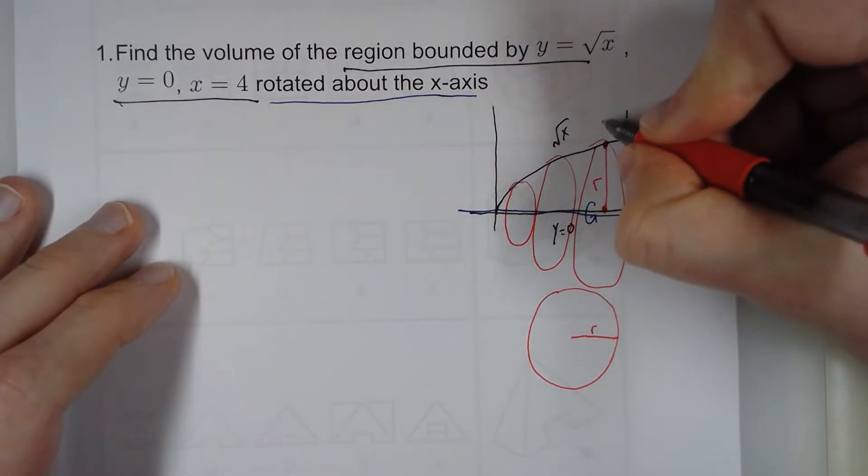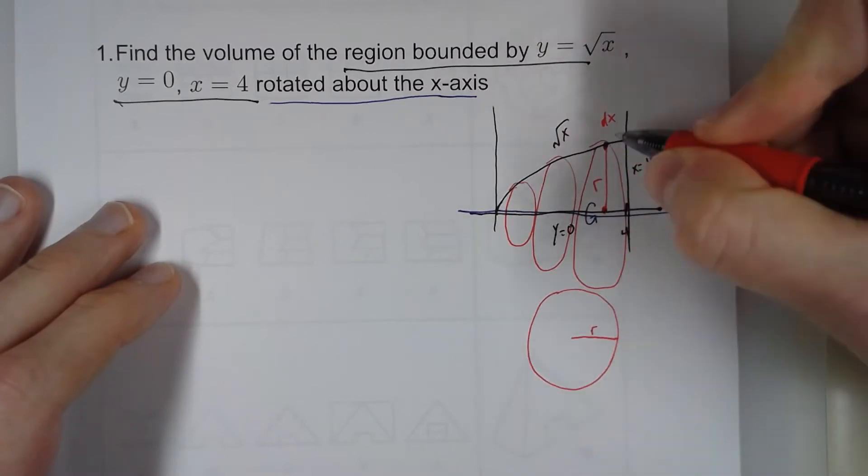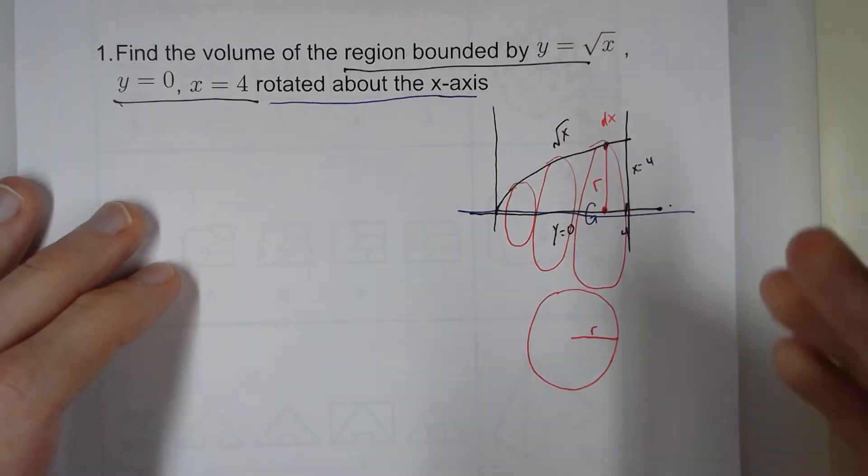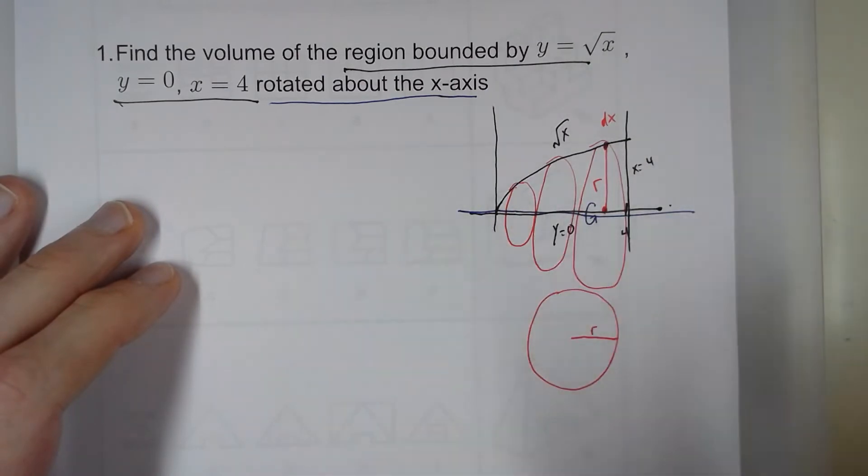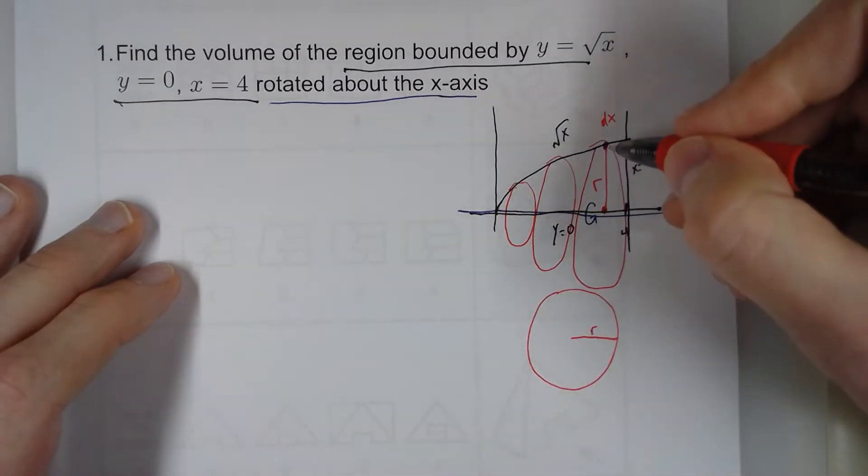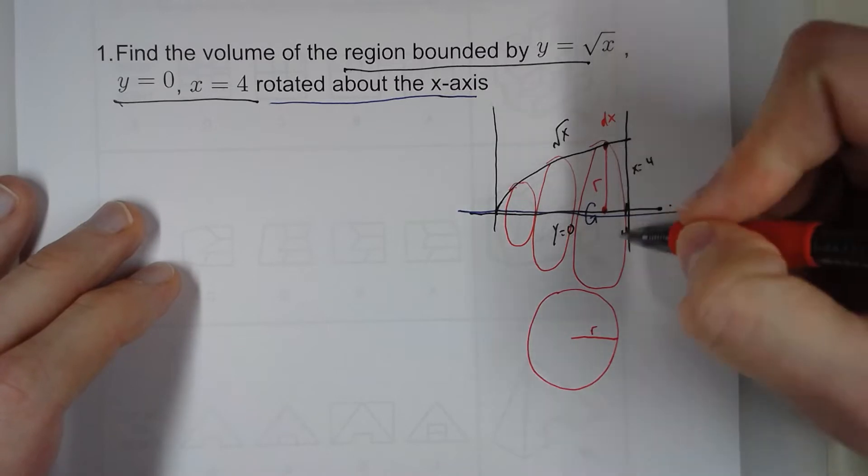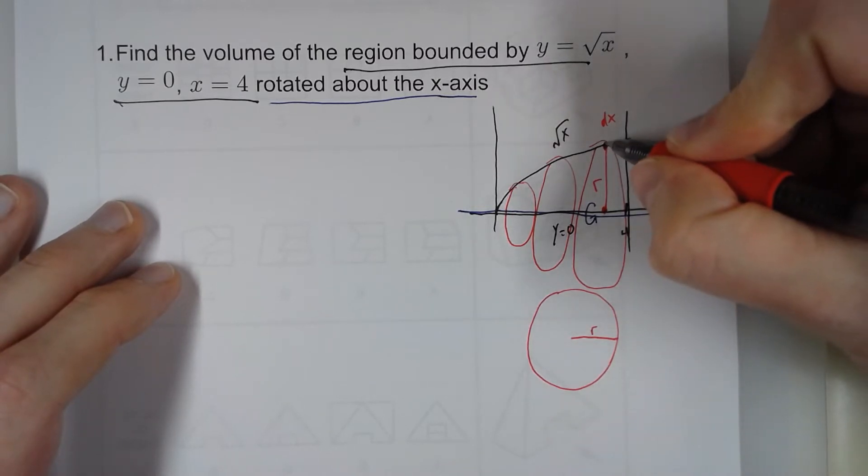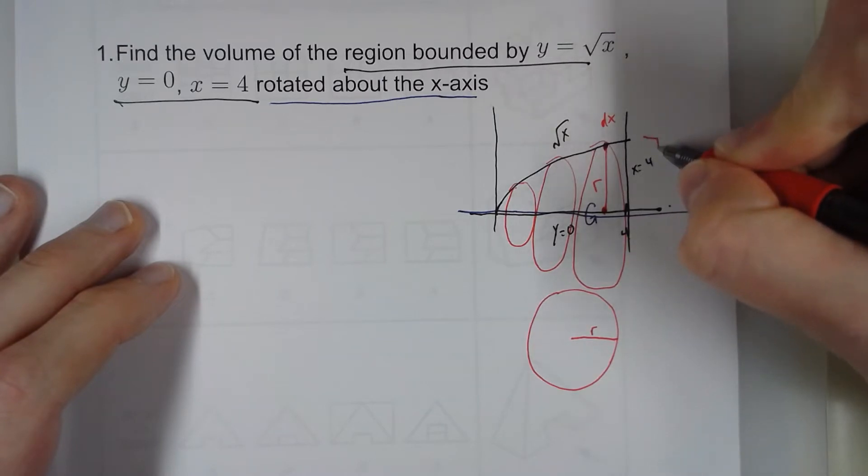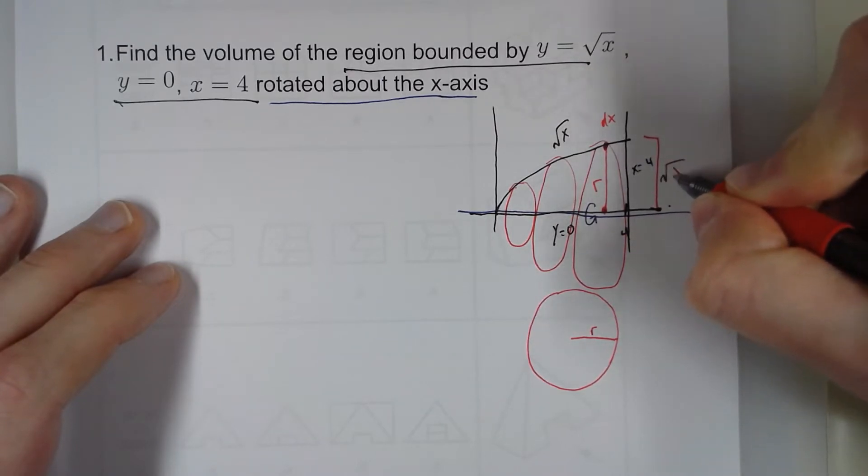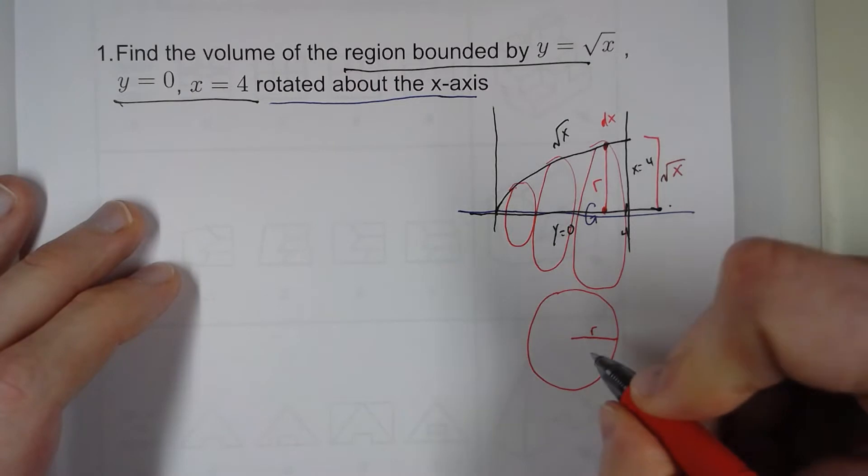And each circle is going to have a thickness of dx, because it's perpendicular to the x-axis. So each slice is infinitely small in the x-direction. Now what is this length right here? Well, this is square root of x, and this is 0. So that radius is just square root of x. So r equals square root of x.